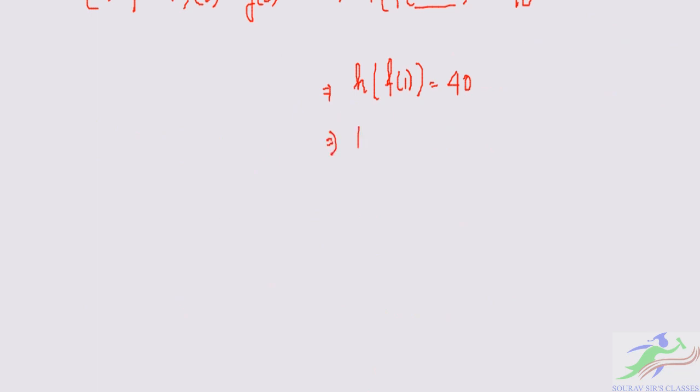So h(2×1)=40. Simply we can find h(2)=40. We have been given to find the value of h(2), so h(2) is nothing but 40.